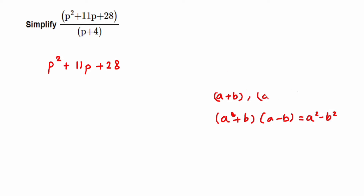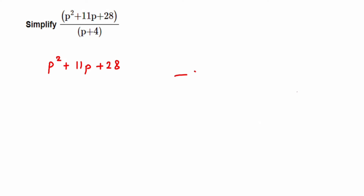Splitting the middle term means finding two numbers such that when multiplied together they give 28, and when added or subtracted they give 11 — the coefficient of p in the middle term. So I need two numbers whose product is 28 and whose sum is 11.